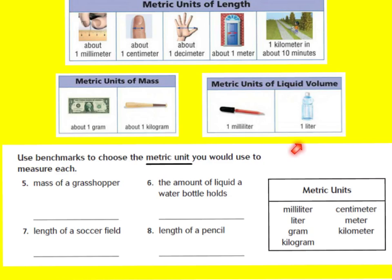Now we're going to look at numbers five, six, seven, and eight in your GoMath book on page 221. It says use benchmarks to choose the metric unit you would use to measure each. Go ahead and answer these questions — pause the video while you do that, and press play when you're ready to go over the answers.